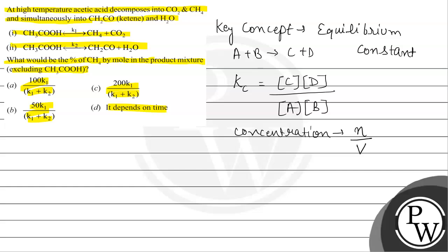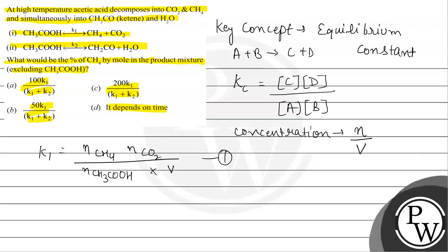For the first reaction, K1 will be equal to the number of moles of CH4 multiplied by the number of moles of CO2, divided by the number of moles of CH3COOH, multiplied by the volume. This is our first equation.